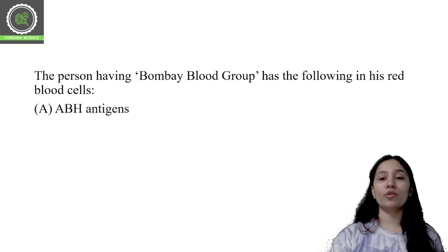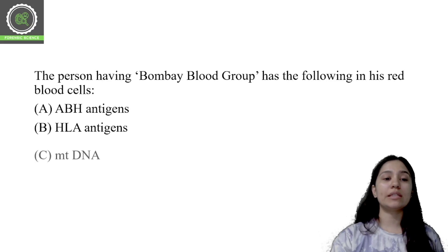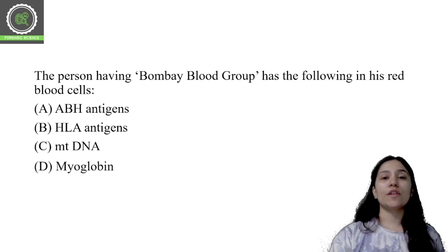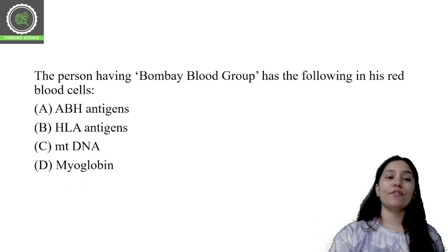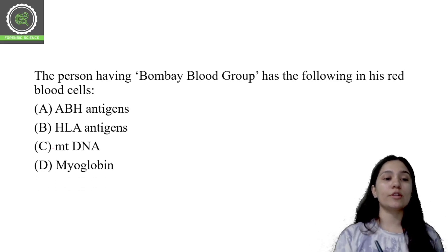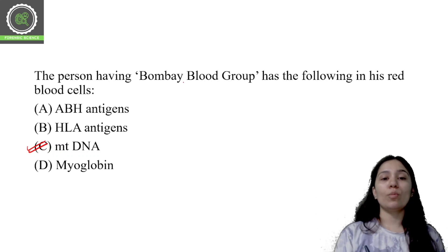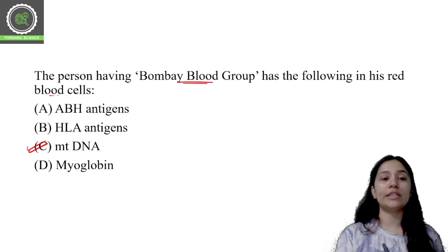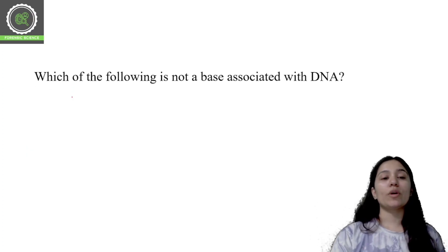Next question: the person having Bombay blood group has which of the following in their red blood cells? The correct option is option C: mitochondrial DNA. Bombay blood group individuals have mitochondrial DNA in their red blood cells.